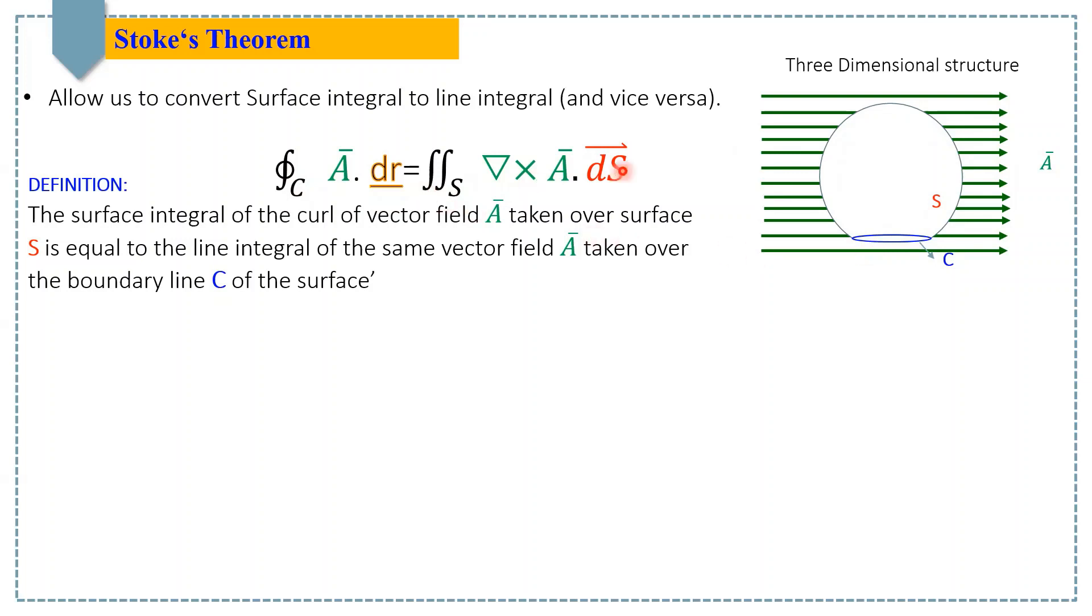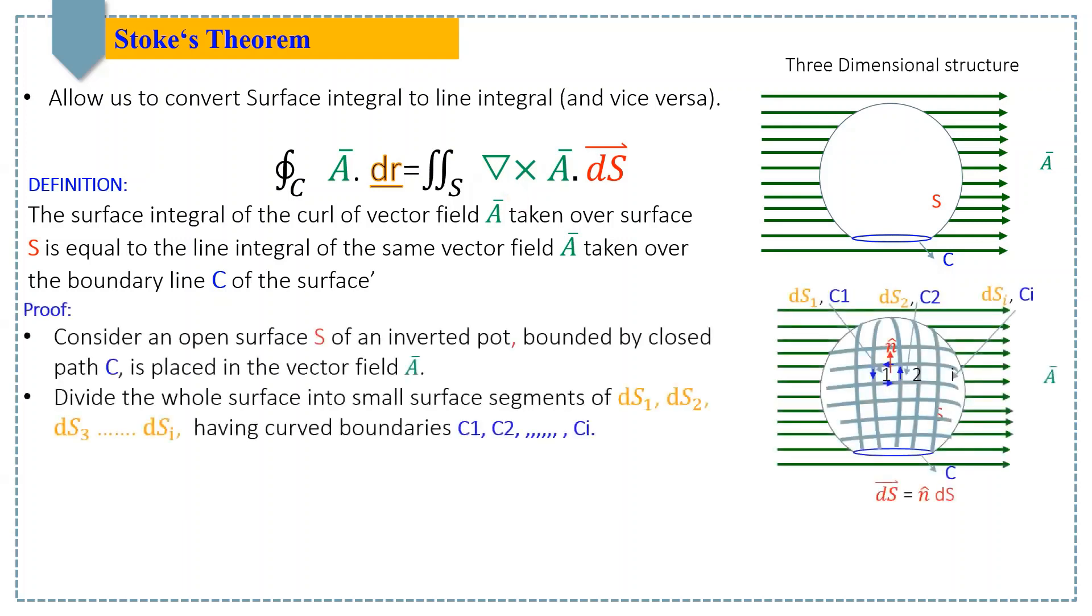To prove this theorem, let's first work out the right-hand side of the equation. For this, divide the whole surface of this inverted pot into i number of surfaces. Each surface segment has surface area dS along with the boundary line C. In the case of the first segment, it has surface area dS1 along with boundary line C1, which you can see by these blue arrows.